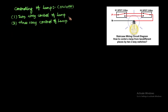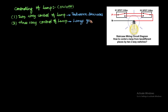What are the examples? Two-way control of the lamp we normally see in our bedrooms and staircases. Three-way control of the lamp is used for large go-downs, function halls, and cinema theaters.